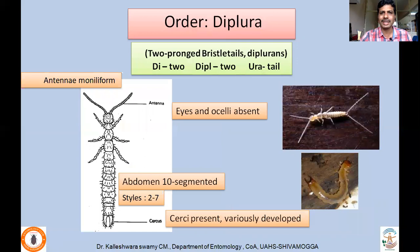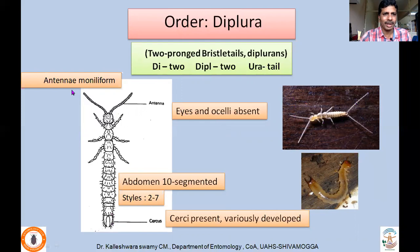Coming to order Diplura — commonly called two-pronged bristletails or diplurans. Etymologically, 'diplu' means two and 'ura' means tail-like structure. The cerci are variously modified — either long or sclerotized. Important features: antennae are moniliform or bead-like; eyes and ocelli are absent. Most non-insect hexapoda are blind as they live in soil. The abdomen is 10-segmented, with styli found on abdominal segments 2 to 7. Cerci are present, which may be long and unsclerotized or short and sclerotized.